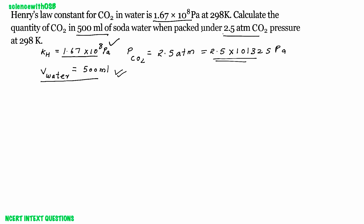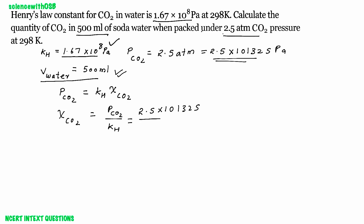Since Henry's Law constant is given, we start with Henry's Law: pressure of the dissolved gas equals Henry's constant times mole fraction. So mole fraction equals pressure divided by KH. Substituting: pressure = 2.58 × 101325 and KH = 1.67 × 10⁸. On calculating, we get mole fraction = 1.5 × 10⁻³.